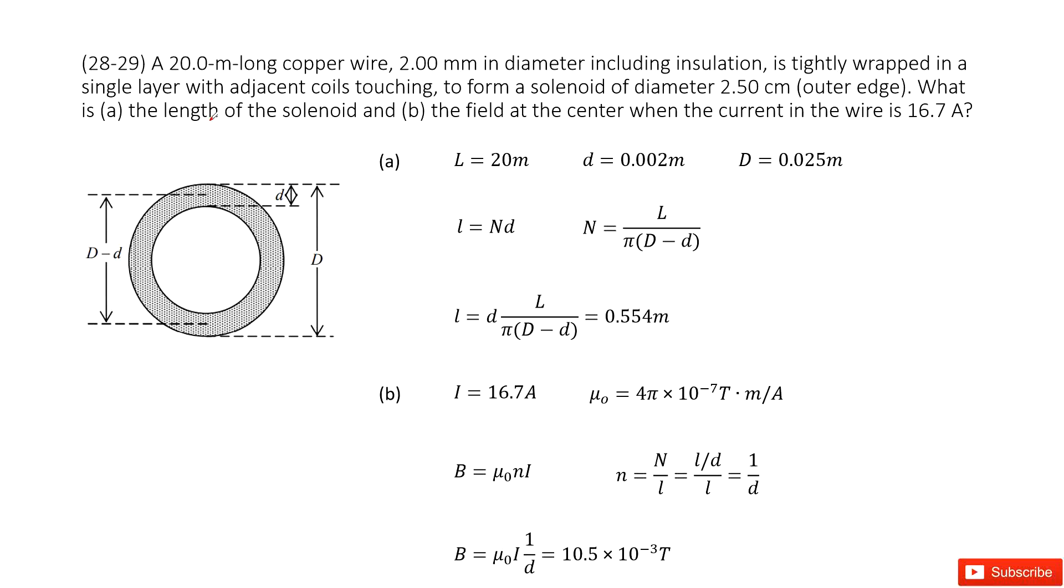Now we look at this solenoid, and we can consider this solenoid is just tightly wrapped in a single layer of adjacent coils. So that means for each coil we just make one turn, second turn, third turn this way.